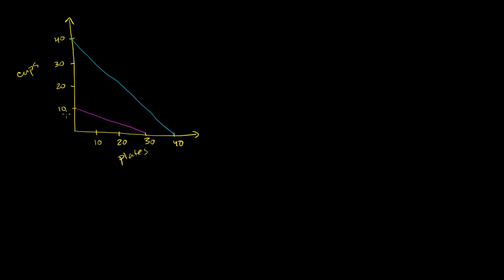Assuming they use the same number of inputs, Charlie can now produce 40 cups in a given day while Patty can only produce 10 — so he has the absolute advantage in cups. He can also produce 40 plates while Patty can only produce 30 — so Charlie now has an absolute advantage in both products. But we'll see it still makes sense for them to specialize because they have different comparative advantages and different opportunity costs.